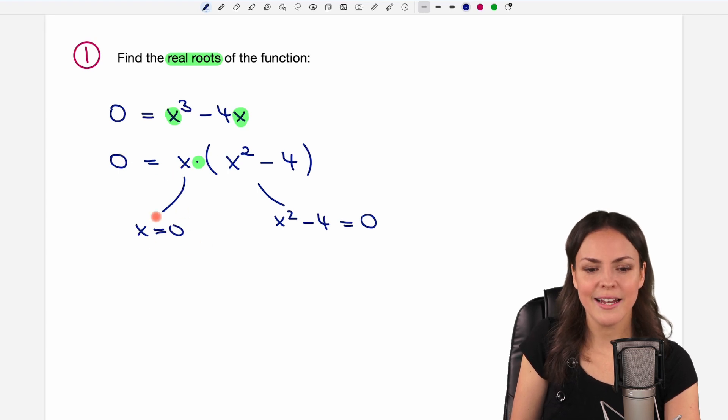Now let's take a look at our two equations here. We start with the left one, x equals zero. This equation is already solved for x. So we don't have to do anything else with this anymore. This is already one of the roots we were looking for. Okay, we found one.